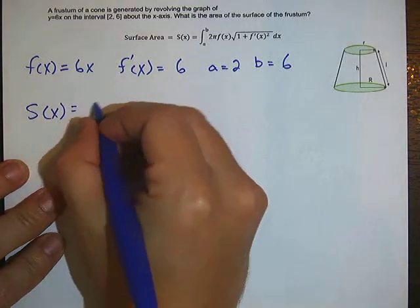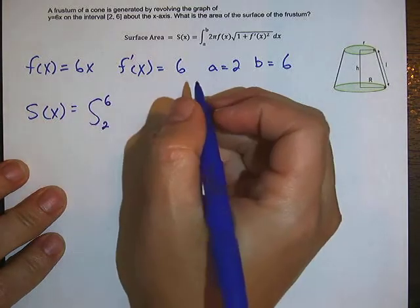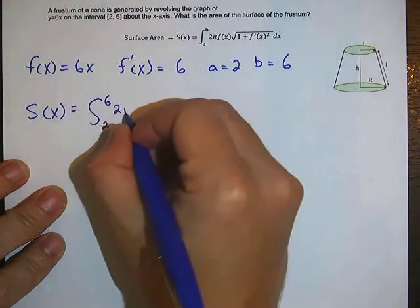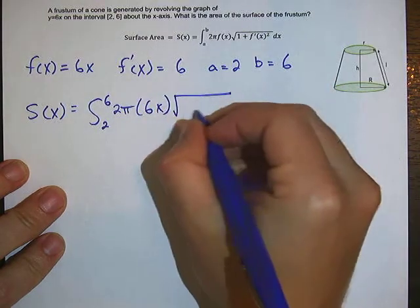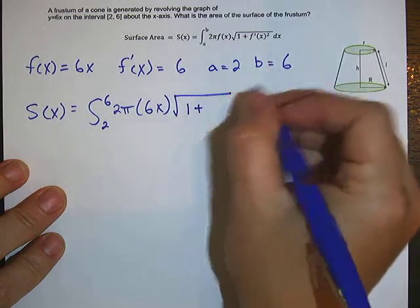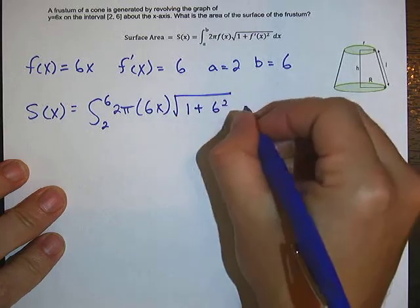So s of x is equal to the integral from 2 to 6, 2 pi f of x which is 6x times the square root of 1 plus f prime of x squared, so 6 squared, dx.